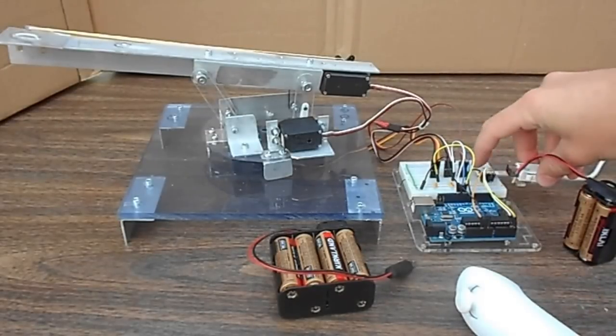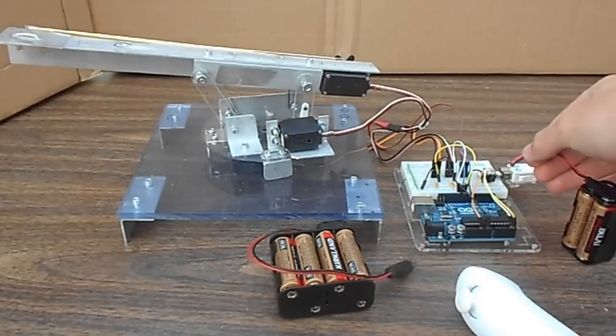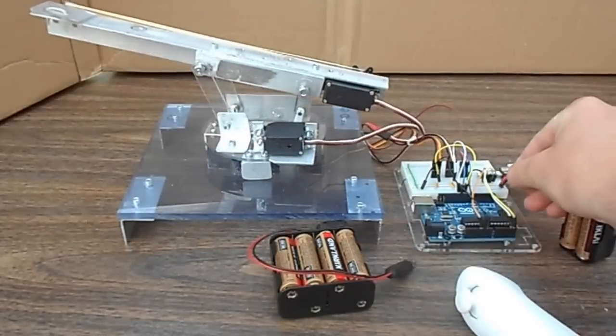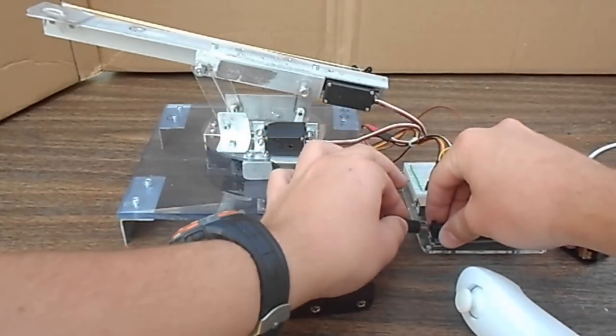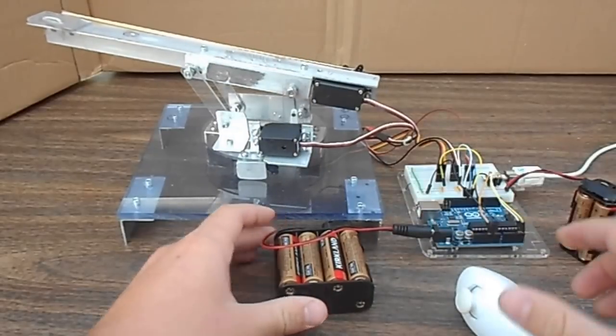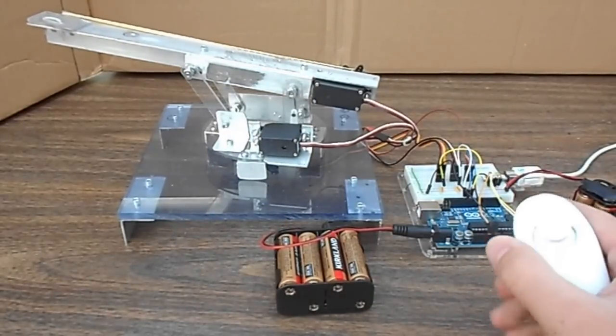Here's the Wii Nunchuck, plugs into the Wii-Check adapter. 6 volts into the rails, 12 volts into the Arduino. You can do 9 instead of 12, but I like 12.